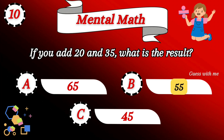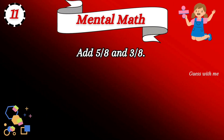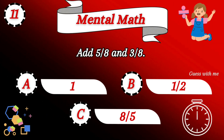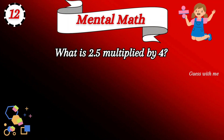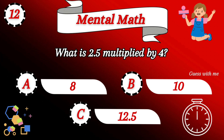Option B — 55 is the answer. Question number 11 is: add 5 by 8 and 3 by 8. The right answer is 1. Question number 12 is: what is 2.5 multiplied by 4?